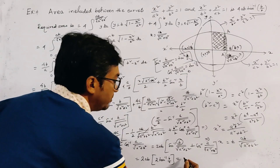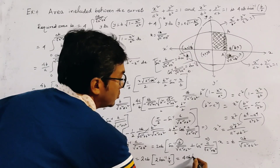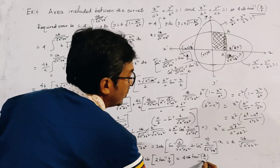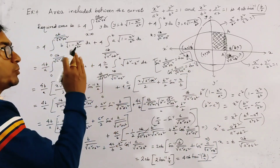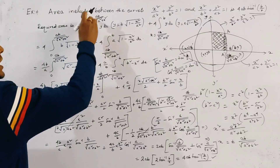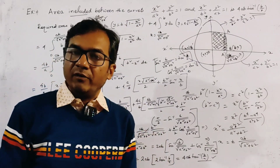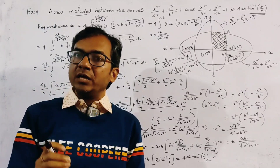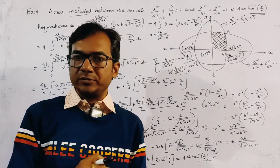So our required answer is 4ab·tan⁻¹(b/a). We have solved the problem of finding the area included between the two ellipses — a very simple but interesting problem of area enclosed by planar curves. Thank you for watching.